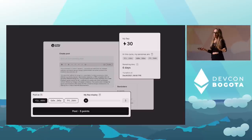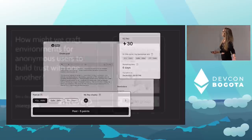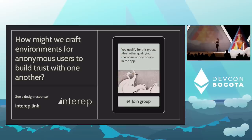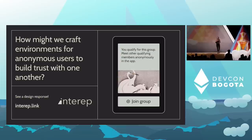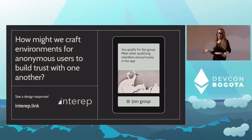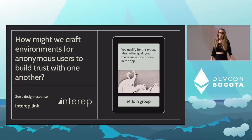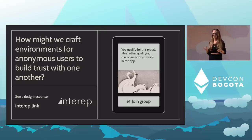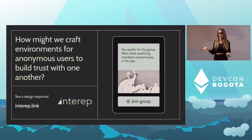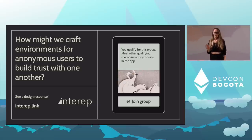That's a cool way to show people making a decision about how they want to appear in a group. How might we craft environments for anonymous users to build trust with one another? A lot of people ask me why I would design apps where people can be anonymous online, because they feel anonymous environments are often hostile. But I would argue that anonymity can create places where everyone has an equal voice and they're not limited by potential judgments if their identity were revealed. An interesting way to create trust is by creating groups where everyone has to prove that they belong.